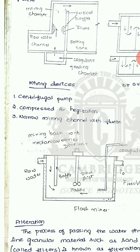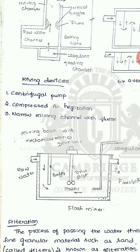The devices used for mixing include centrifugal pumps, compressed pumps, and narrow mixing channels with flumes. You may have observed in our campus, at the open well, a centrifugal pump is provided to lift water, and the second is a compressed pump type, and the third is the narrow mixing channel.